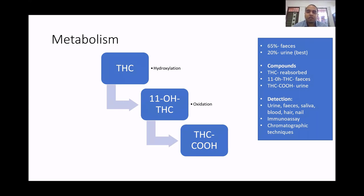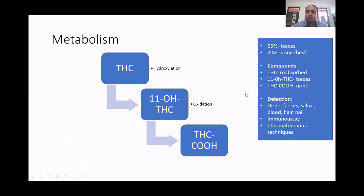Regarding metabolism, THC gets hydroxylated to form 11-hydroxy-THC, which then undergoes oxidation to form carboxy-THC (11-nor-9-carboxy-THC), and further undergoes glucuronidation before excretion. About 65% is excreted in feces and 20% in urine. This metabolism is clinically important: in urine drug testing, the most commonly detected substance is carboxy-THC, while in feces, 11-hydroxy-THC is detected. Delta-9-THC itself is reabsorbed and not frequently detected.